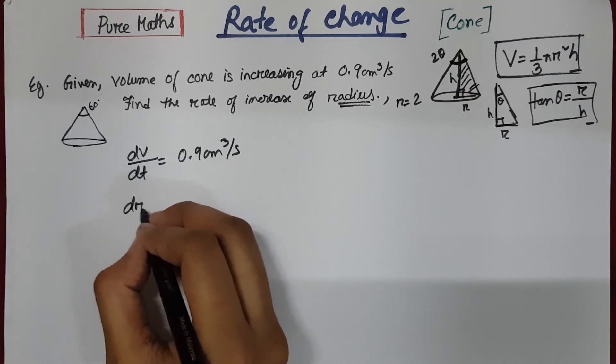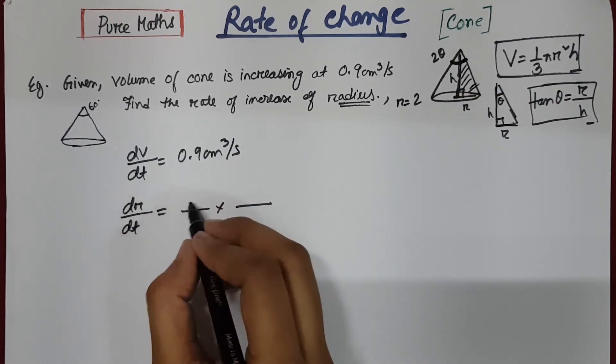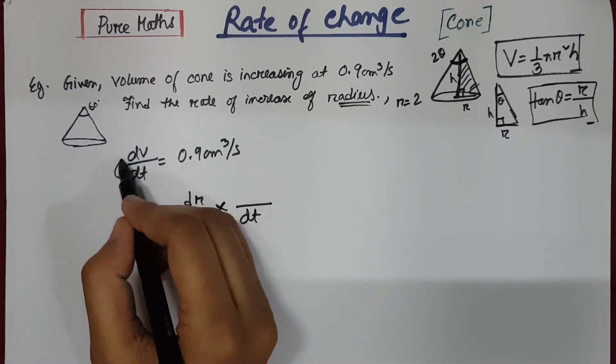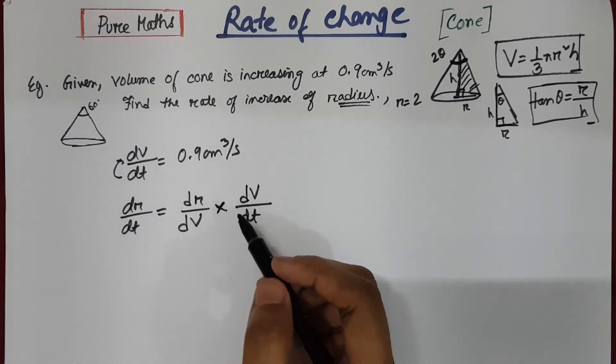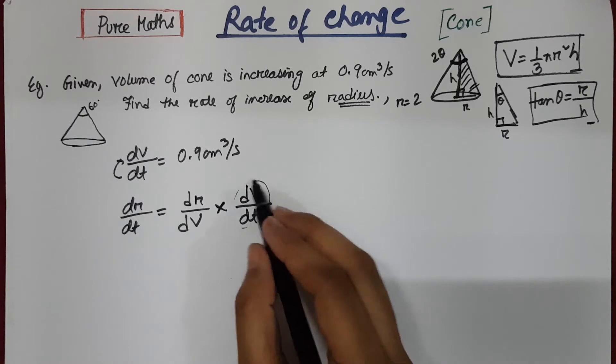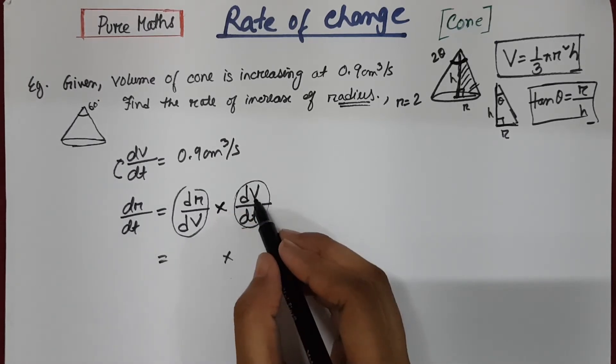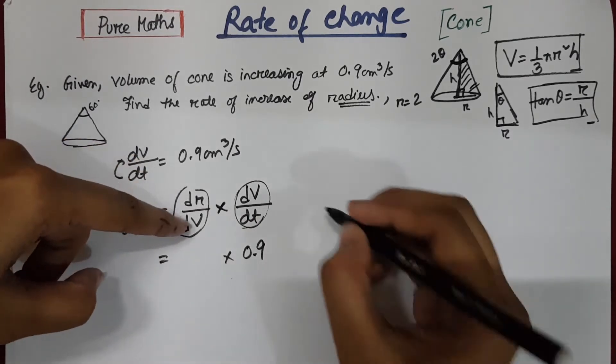So dr by dt. So replace dr and dt here, so dV by dt times dr by dV. We know the value of dV by dt, so let's substitute it here along with dr by dV.